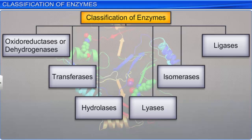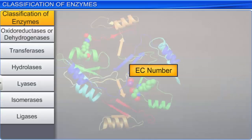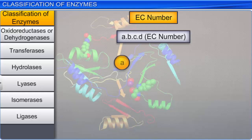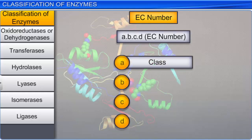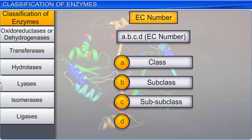In an EC number, for example A.B.C.D — A will denote the class, B the subclass, C the sub-subclass, while D will denote the sub-sub-subclass.